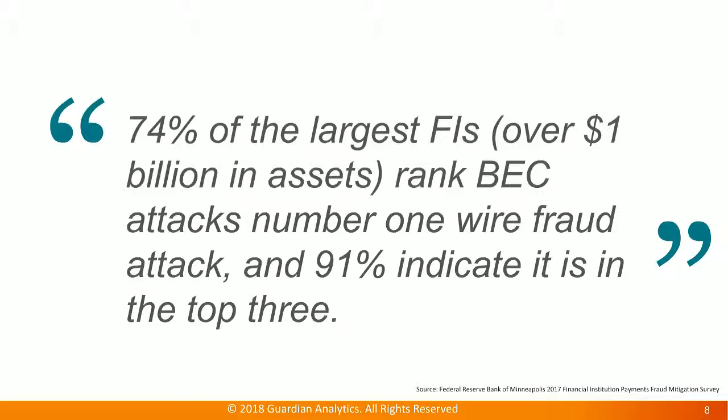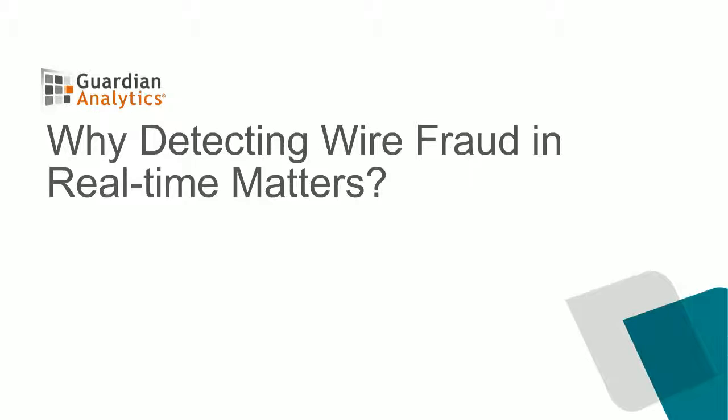Seventy-four percent of the largest financial institutions — over $1 billion in assets — rank BEC attacks as number one in wire fraud, and 74% of them place it in the top three. I'm going to hand it over to Wendy to explain why detecting wire fraud in real time matters.